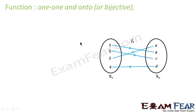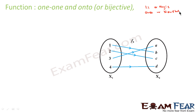A function can be classified as either one-to-one or many-to-one. Also, it will be either onto or non-onto. So you will have several combinations: a function can be one-to-one onto, one-to-one not onto, many-to-one onto, or many-to-one not onto.